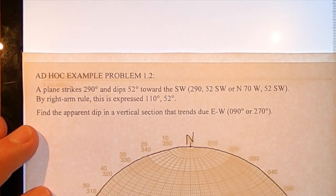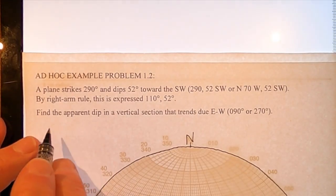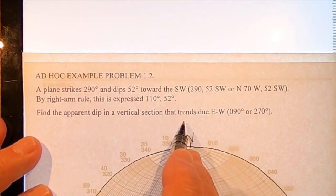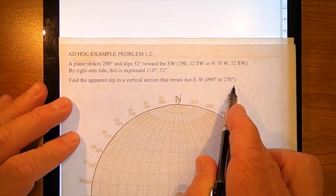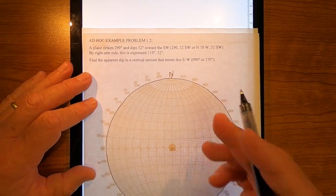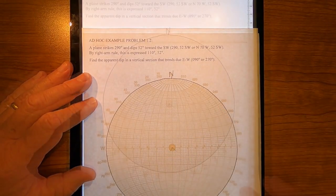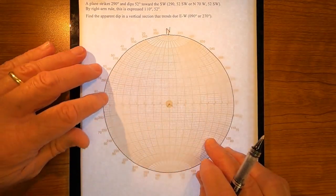Our interest is finding the apparent dip in a vertical section that trends east-west, and that would be 090 or 270, whichever actually results in an apparent dip. I need to mark 290.